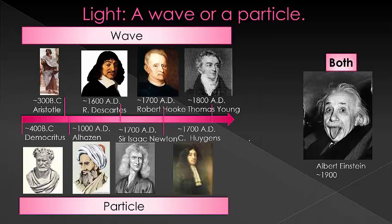Throughout human history, there have been debates about the exact nature of light. As far back as 400 BC, people were debating about whether it was a wave or a particle. As each step in history occurred and more scientific knowledge was developed, the debate raged on. There are many more players in this game than what are listed here, and the history of how each philosopher or scientist defended his point of view is fascinating.